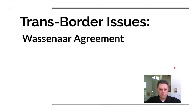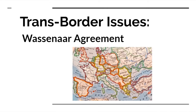The first topic is the Wassenaar Agreement. There are 41 countries that have agreed to not distribute cryptographic tools. The intent is to prevent things like subversion, revolution, or an imbalance of power.